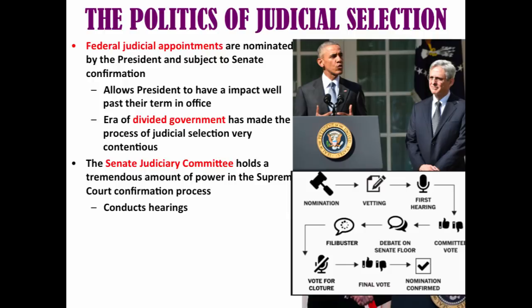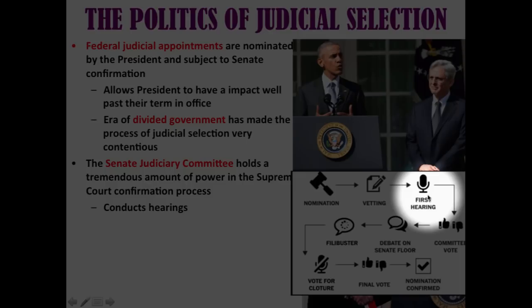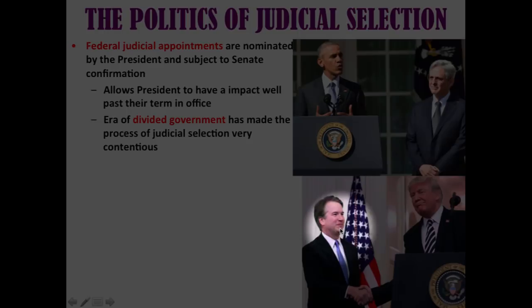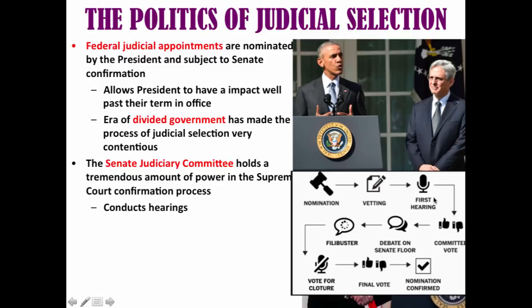Once a judge is nominated to the Supreme Court, the Senate Judiciary Committee holds a tremendous amount of power in the confirmation process. They conduct hearings where members ask questions about the nominee's judicial philosophy. Merrick Garland never got a chance to have his hearing, but Trump's nominee Brett Kavanaugh had a hearing that became very contentious. As a result of divided government, these nominations have become highly political and the process has become longer and more partisan.